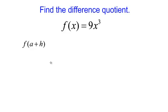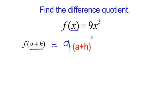I'm going to begin by looking for f at a plus h. This is just part of my formula. So wherever I see x, I will plug in a plus h. We have 9 times x cubed, but only the x is cubed. So it would be 9 times, instead of x cubed, I will put a plus h, and that is cubed. So instead of 9x cubed, I have 9 times a plus h cubed.